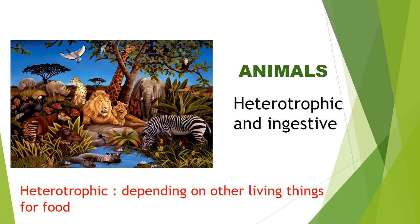Heterotrophic and ingestive. Heterotrophic means depending on other living things for food. We have seen that animals obviously cannot make their own food, hence they are always dependent on others for their food, and hence they are known as heterotrophic.